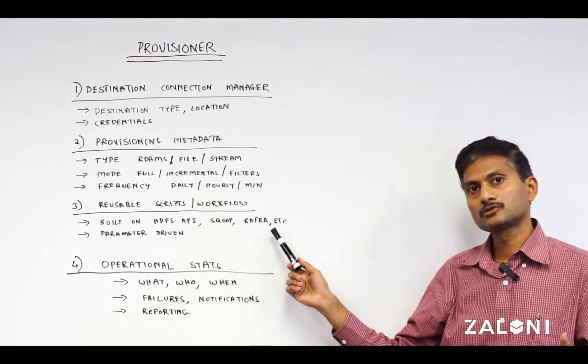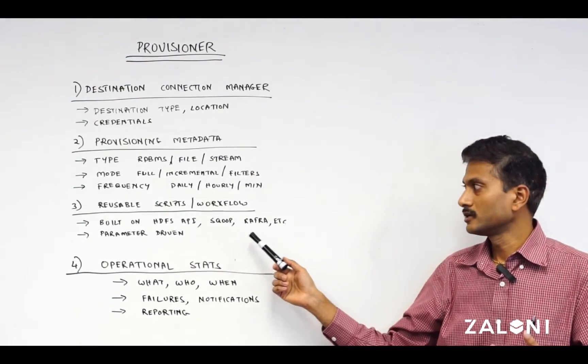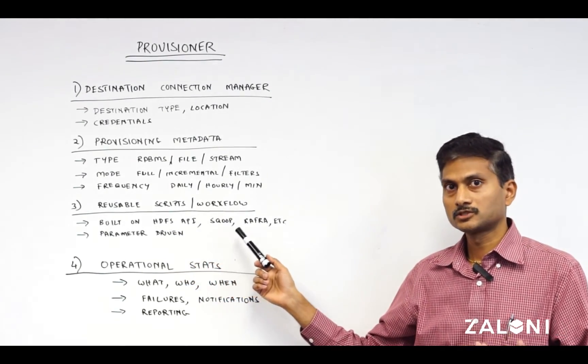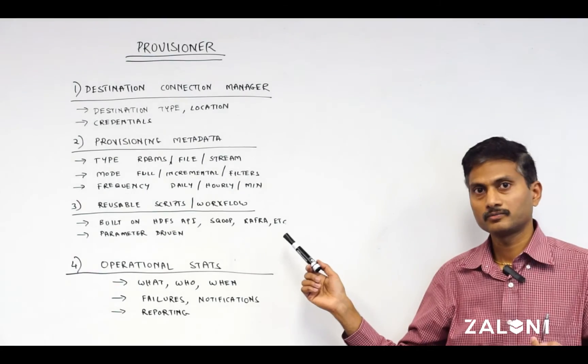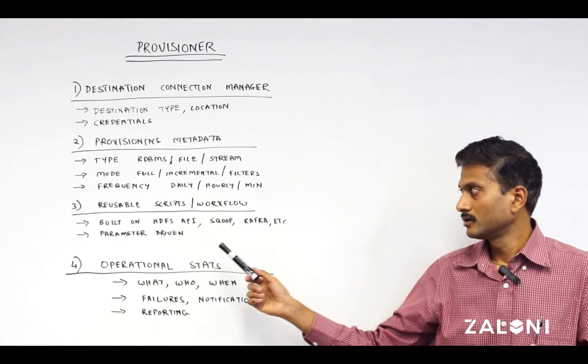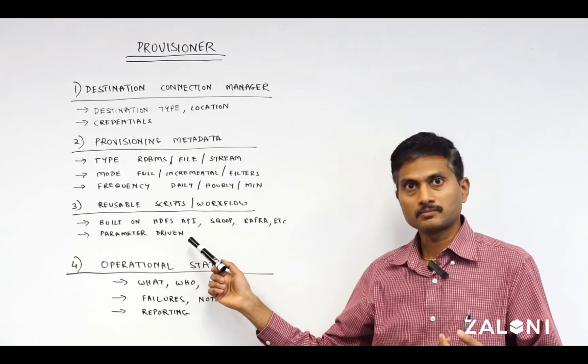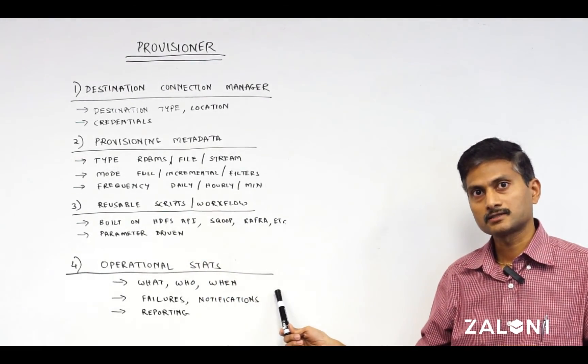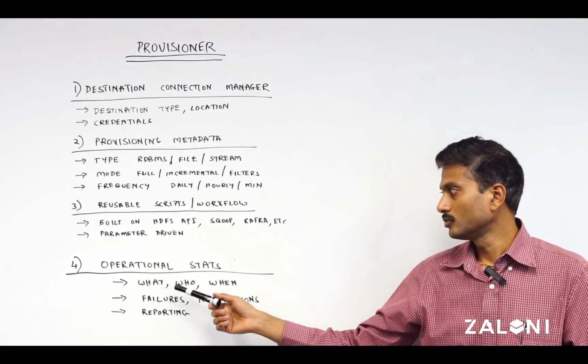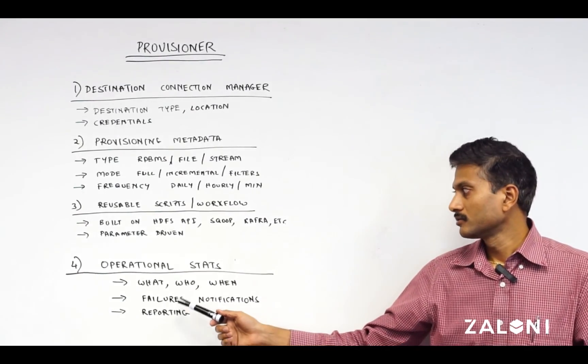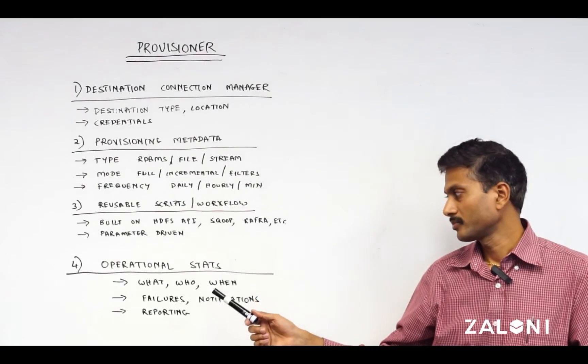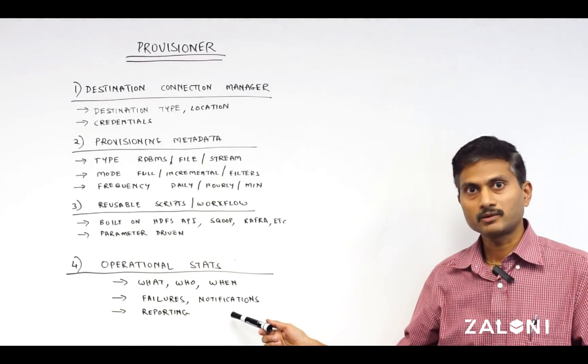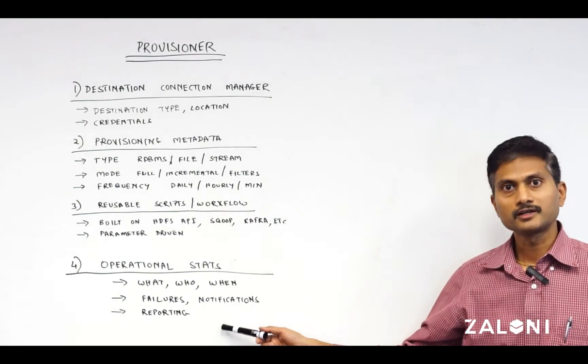Three, we need to build the reusable scripts and components that can be on HDFS APIs, Scoop, Kafka, etc. Make sure it's parameter driven so that it's reusable. Four, operational stats. Collect who, what, when requested the provisioning, and what happened. Failures and notifications in case it happens. And finally, reporting.